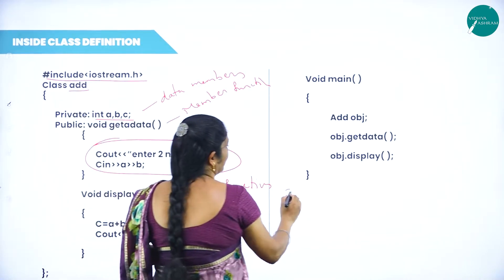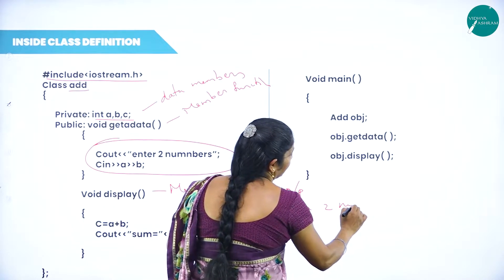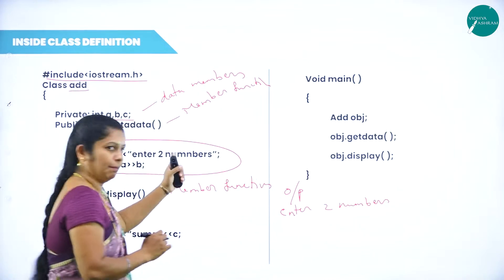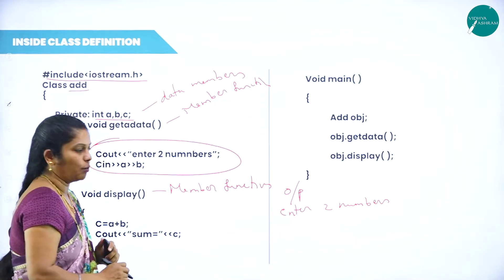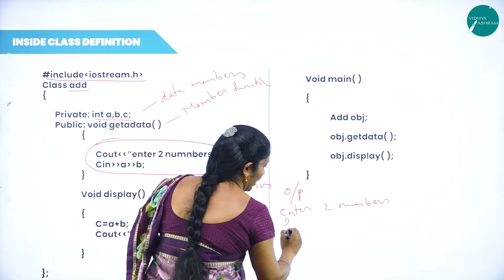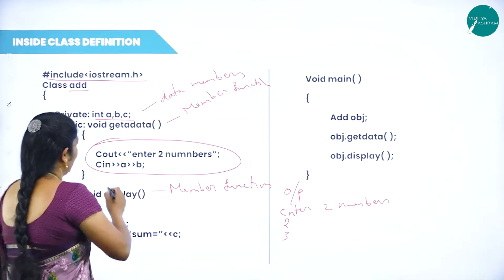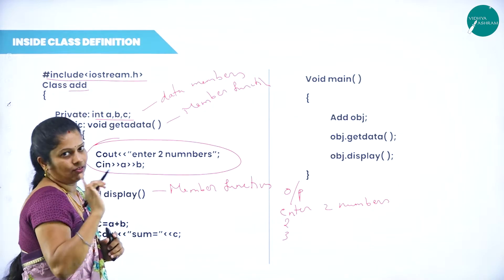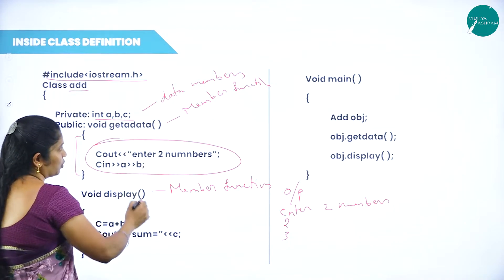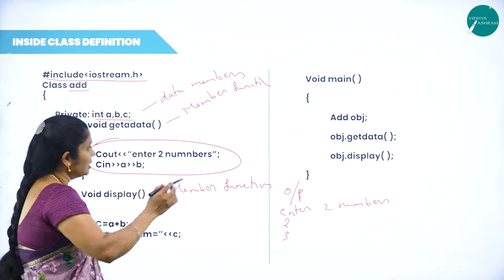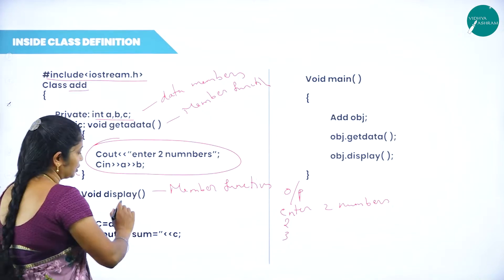In the output screen, it will display 'enter two numbers' — that is the cout statement. Then cin with extraction operator reads A and B — so A value is 2 and B value is 3. Then we are closing this get_data function. Next, one more function — void display. In this program, we have three data members and two member functions: the first member function is get_data and the second member function is display.